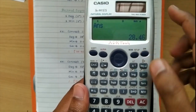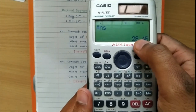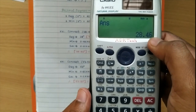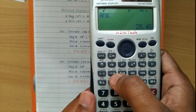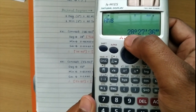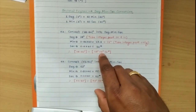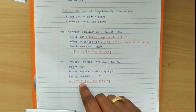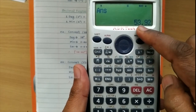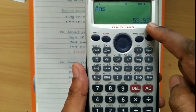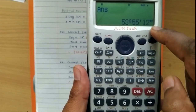Now I will show the same calculation using the 991 ES type calculator. Suppose the angle is 28.46 degrees and you want to convert it into degrees, minutes and seconds. There is also a button for degree, minute and second on this calculator. Press this button and you get 28 degrees, 27 minutes and 36 seconds — the same answer as the theoretical approach. For 53.92 degrees, press the button and you get 53 degrees, 55 minutes and 12 seconds.